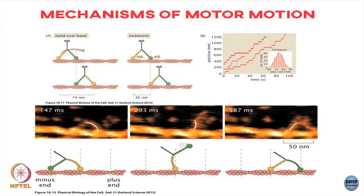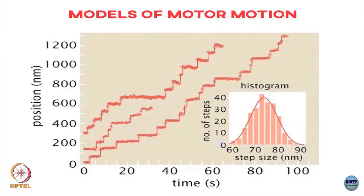These sorts of experiments can tell us how these motors are moving, and you can do this for different types of motors — kinesin versus dynein — and see what mechanisms differ from one motor versus the other. So if I wanted to build models of this translation of motors like kinesins, dyneins, myosins walking on tracks like microtubules or actins, what sort of questions could I ask?